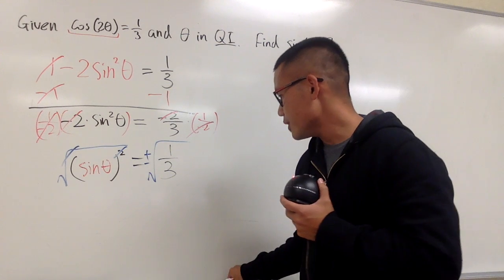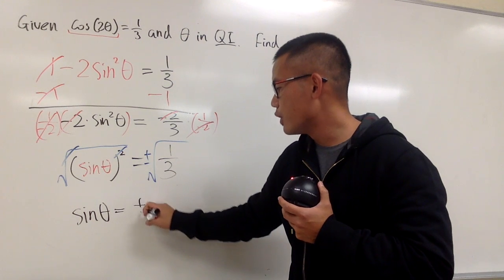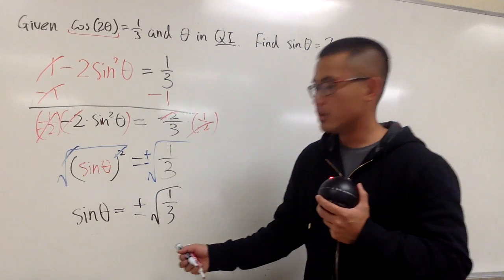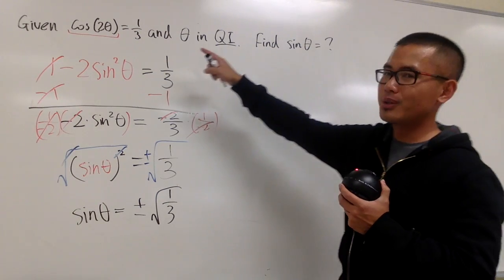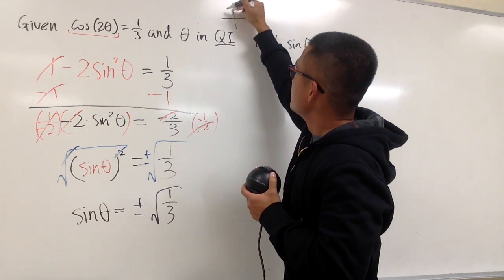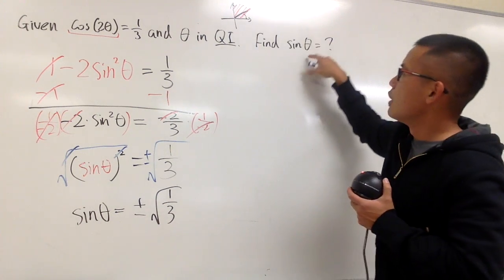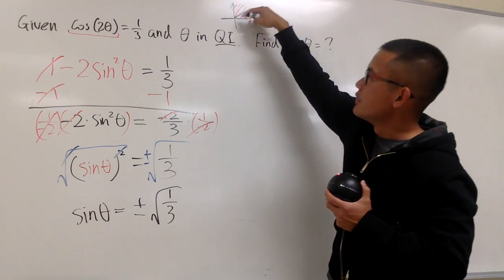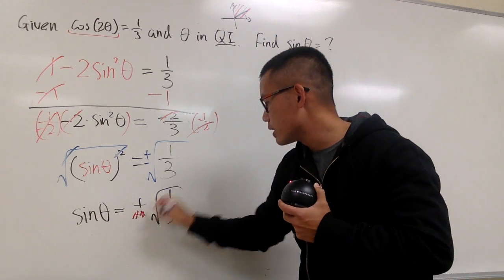And now, we will have two choices. Because we have sine theta is equal to either positive or negative square root of 1 third. And now the question is, is it a positive version versus a negative version? We have to go back to the question. Remember, theta is in the first quadrant, right? So that means if you just draw a picture real quick, this is the first quadrant. And sine of that, whatever angle it is, I don't know the angle. But I know for sure sine of theta in the first quadrant, this has to be positive. That means I don't want the negative version.